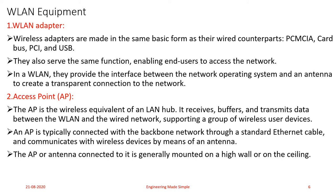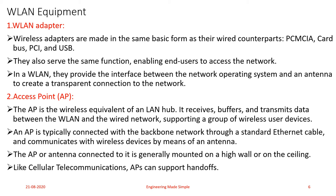The access point, or alternatively the antenna connected to it, is generally mounted on a high wall or on the ceiling when dealing with wireless local area networks. Like cellular communications, access points can also support handoffs. Just as in cellular telephony, when a mobile user moves from one coverage radius to another a handoff takes place — similarly, in wireless local area networks, the access point performs these handoffs.